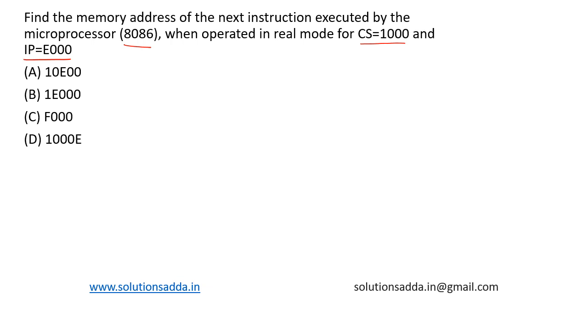Here the address bus is 20 bit and CS is the base segment and IP is the offset.